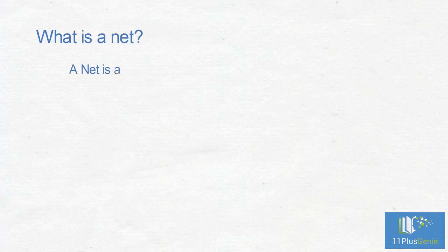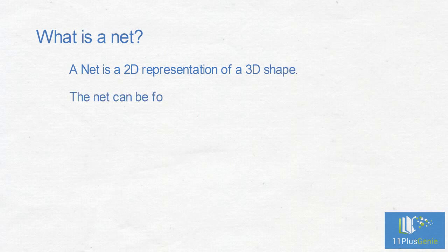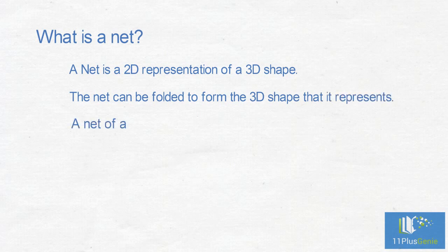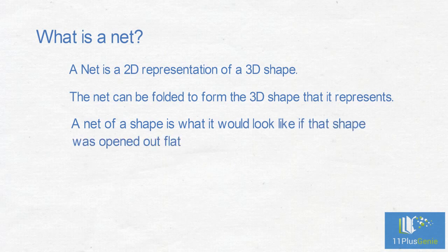What is a net? A net is a 2D representation of a 3D shape. The net can be folded to form the 3D shape that it represents. A net of a shape is what it would look like if that shape was opened out flat.